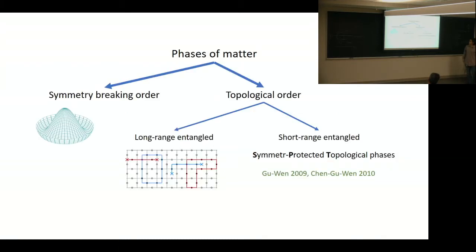First, let's remind ourselves what SPT phases are. We can roughly divide phases of matter into symmetry-breaking phases and phases that do not break symmetry. In the second category, we have different topological orders, and those can be divided roughly into those that are long-range entangled and those that are short-range entangled. SPT phases fall into the short-range entangled category.